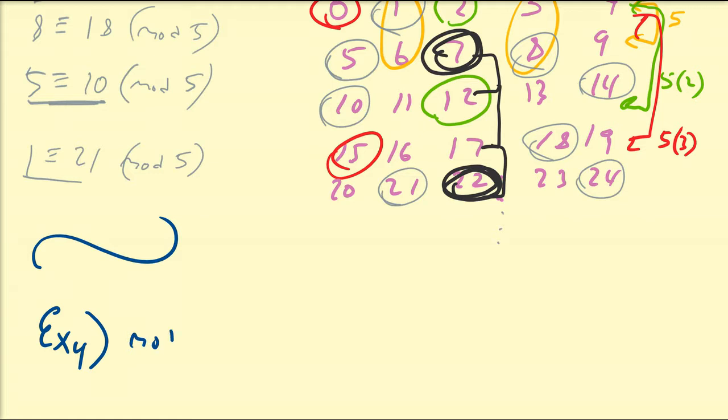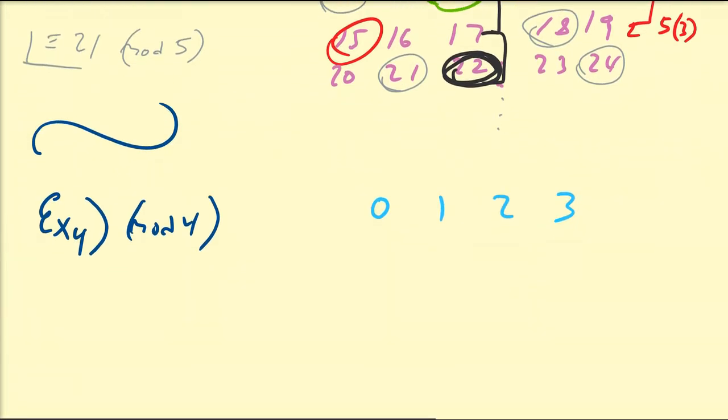So let's look at mod 4. So for mod 4, then I'm going to group things in pairs of 4s. So I'm going to do 0, 1, 2, and 3. So that's going to be my first group or my first class of modulo 4.